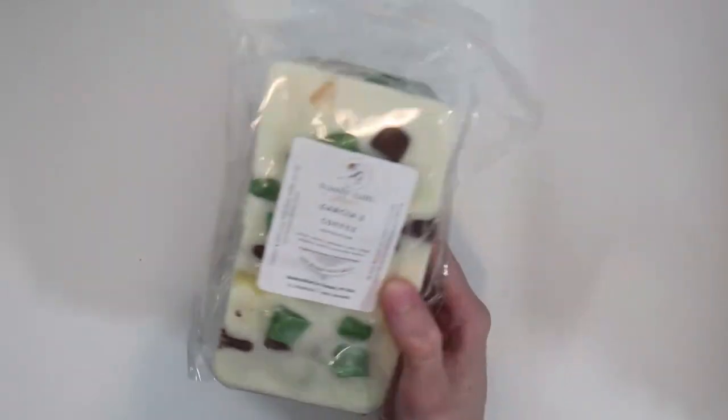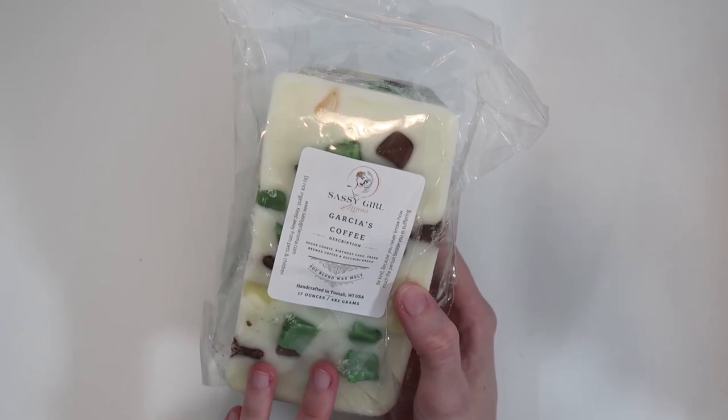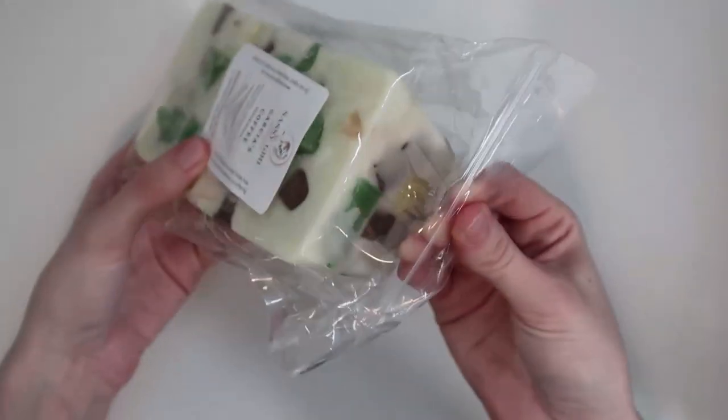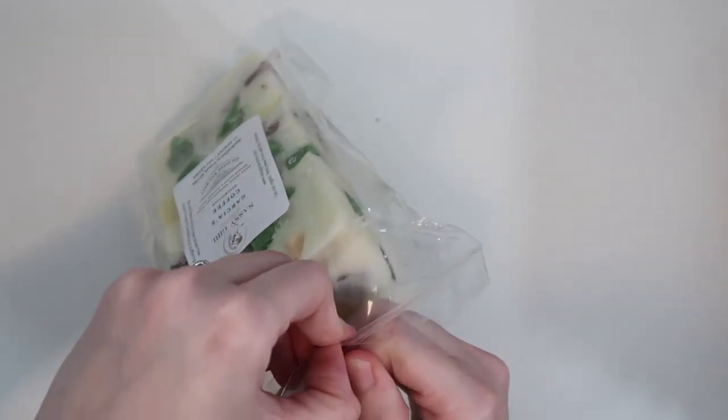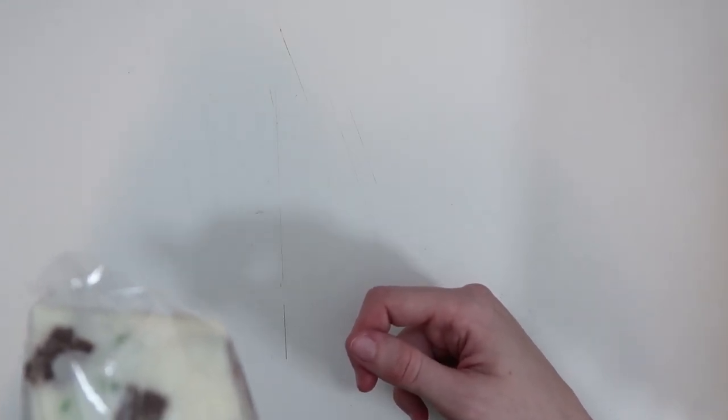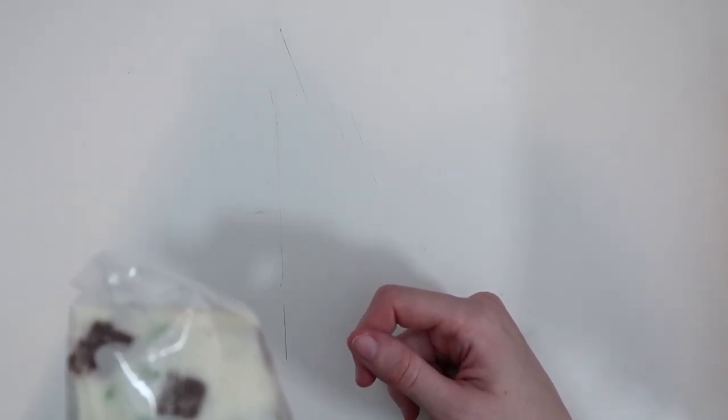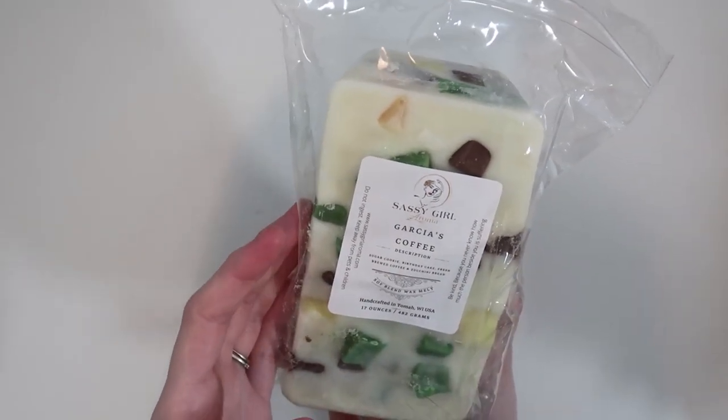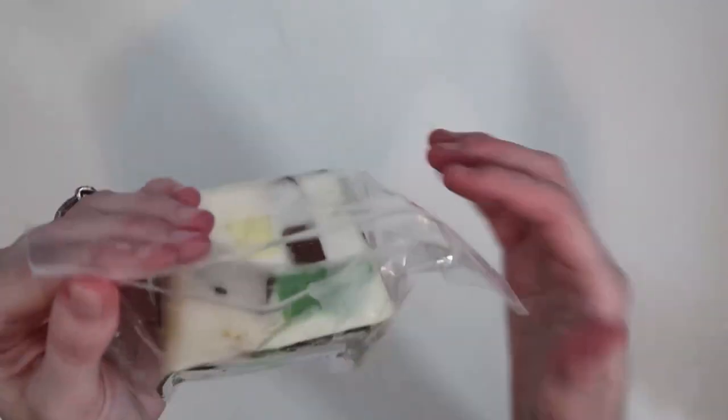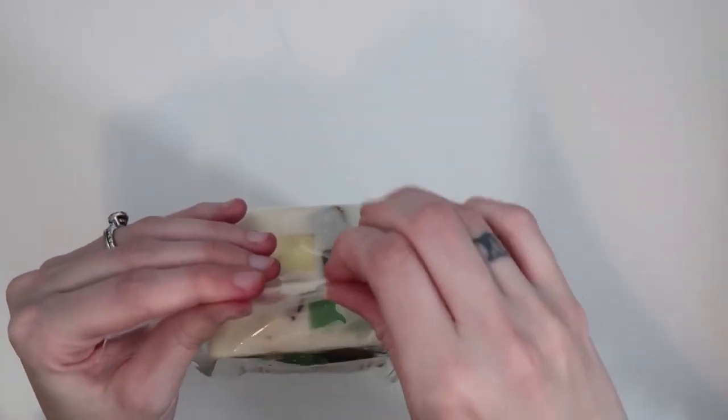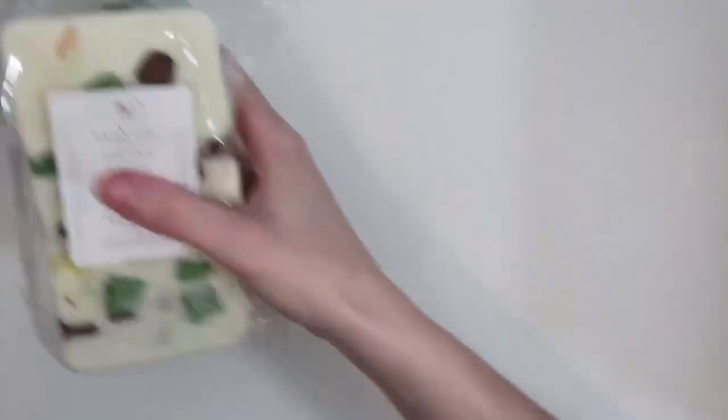The next loaf that I got here is called Garcia's Coffee. I have seen the Garcia blend before. And I've been wanting to try it. So it's sugar cookie, birthday cake, fresh brewed coffee, and zucchini bread. This is fantastic. The coffee in this is so good. It's not a super bitter espresso coffee. It's a very bakery almost style coffee to me, like bake shop. I'm not really smelling much birthday cake. But it mostly to me just smells like the fresh brewed coffee and like a hint of that zucchini bread.